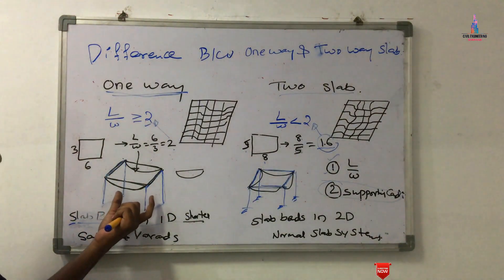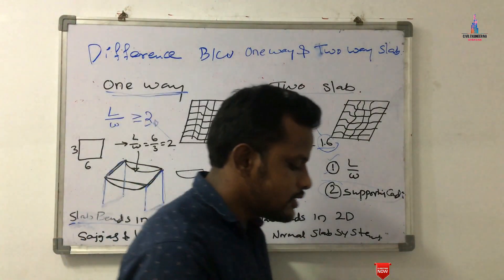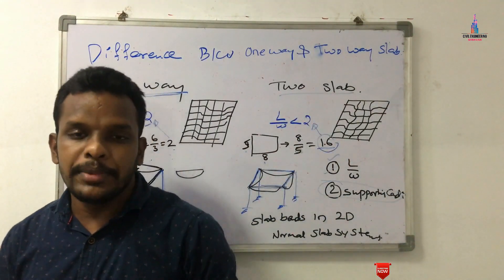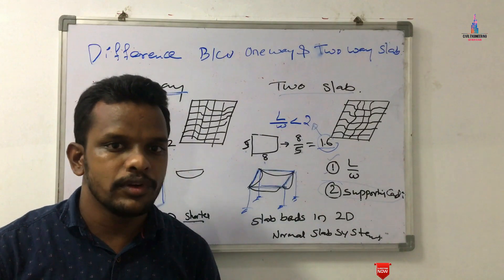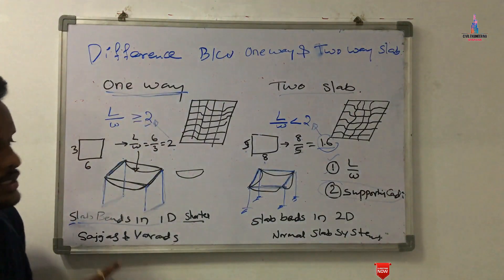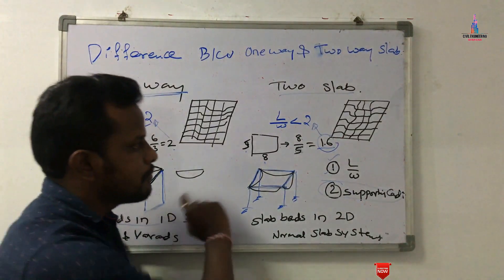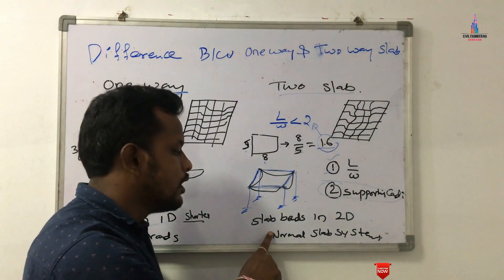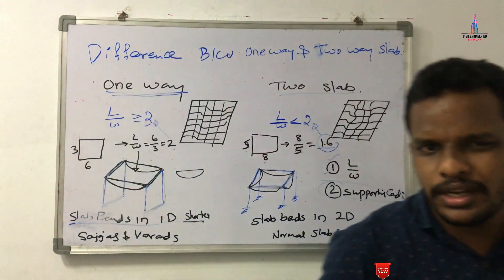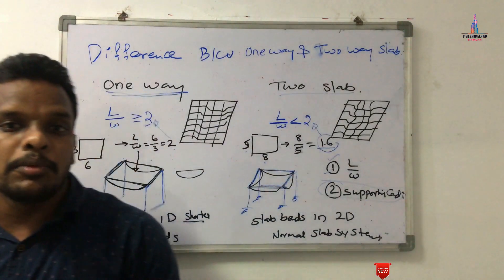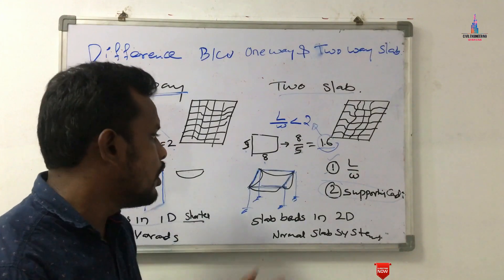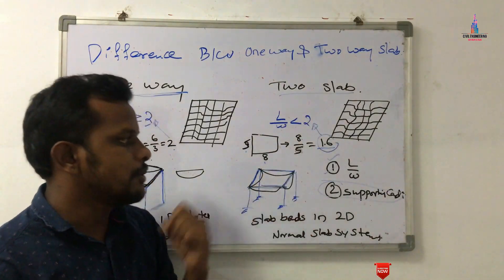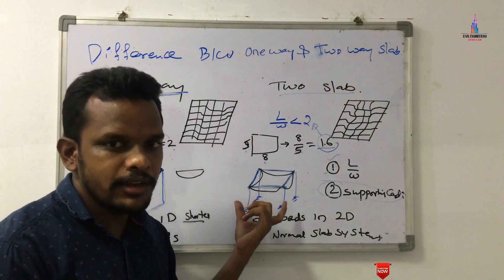A perfect example of a one-way slab system is staircases and verandas, where only opposite-direction beams are provided. For the two-way slab system, the typical example is the normal slab construction used in G+1, G+2, or G+3 buildings, where the slab member is supported on all four sides.